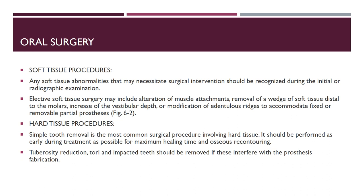Coming to the different modalities carried out before doing fixed prosthodontics. The first one is oral surgery. In soft tissue procedures, you'll be taking out any soft tissue abnormalities. You will be taking a radiograph and seeing if any surgical intervention is required. If required, elective soft tissue surgery may be done to alter any muscle attachments, removal of any wedge of soft tissue, or any modification of the edentulous ridges to afford accommodation of fixed or removable partial prosthesis.